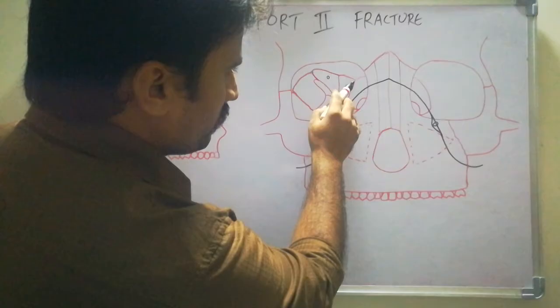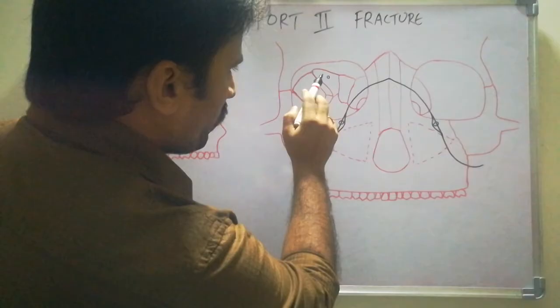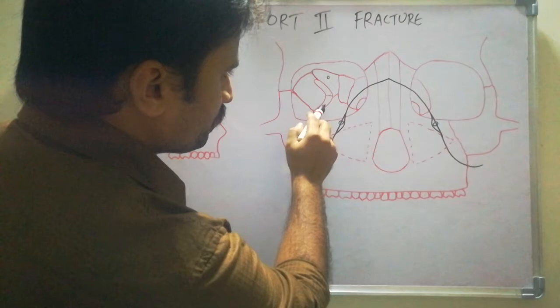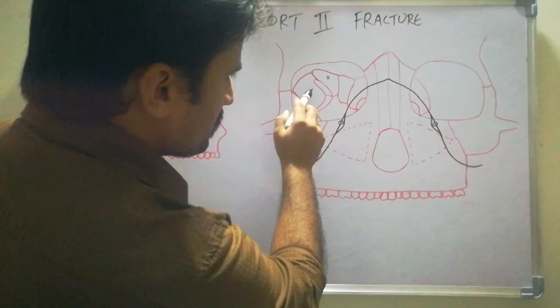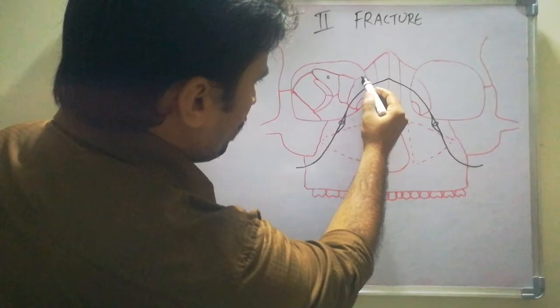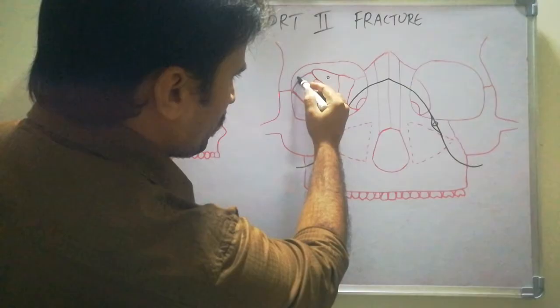After the lacrimal bone, we have the ethmoidal bone. After the ethmoidal bone, we have the lesser wing and greater wing of the sphenoid bone. In between them, this is the superior orbital fissure and this is the inferior orbital fissure and the optic canal. This complete area is the orbital plate of the frontal bone.